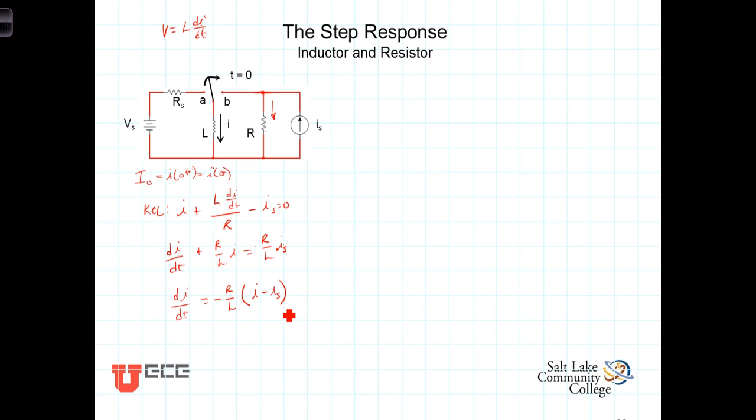Now, divide both sides by this term in parentheses, multiply both sides by dt, and we're left with dI over (I minus Is) is equal to negative R over L times dt. Integrating this, on the right-hand side, we'll be integrating from 0 to t.